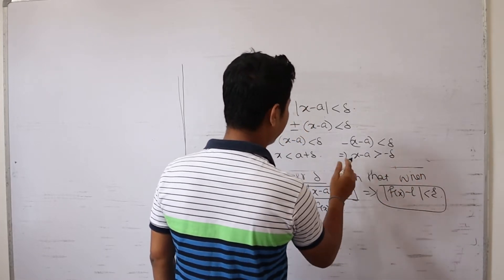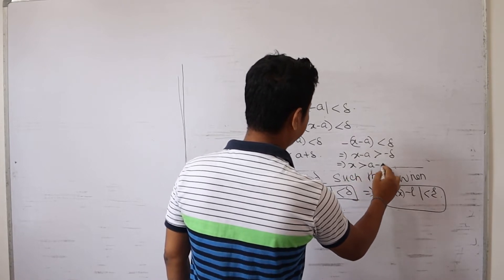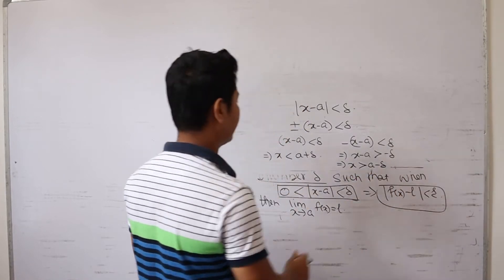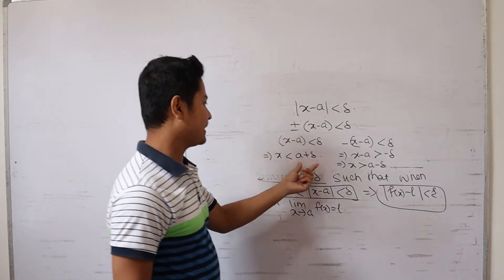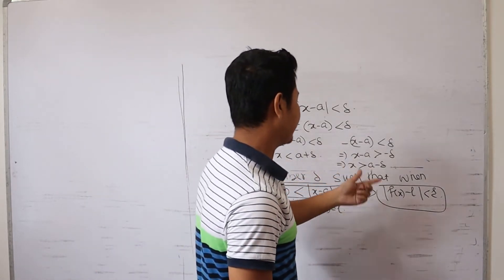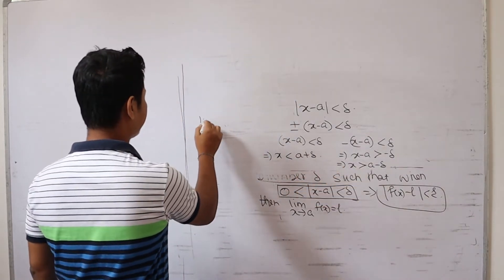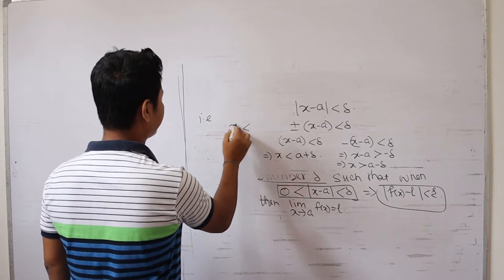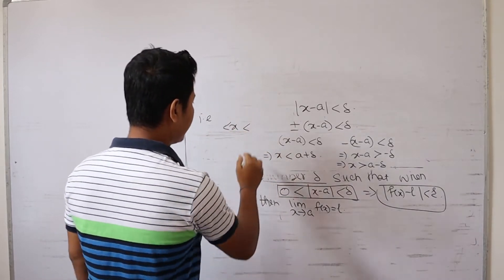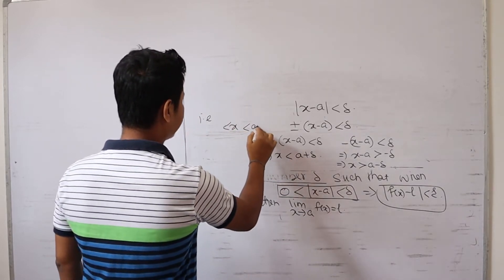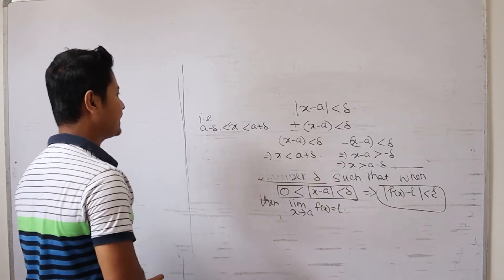From mod of x minus a less than delta, we get: x is greater than a minus delta, and x is less than a plus delta. That is, x is lying between a minus delta and a plus delta.